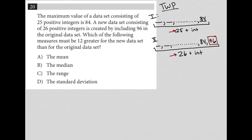Answer choice A is eliminated. The median is just the middle number. I don't know what that middle number is for data set one, and I don't know what it is for data set two. It could be that by adding another number, the median is 12 higher — but I don't know that for sure. That's more of a could be true, not a must be true. So choice B is eliminated.